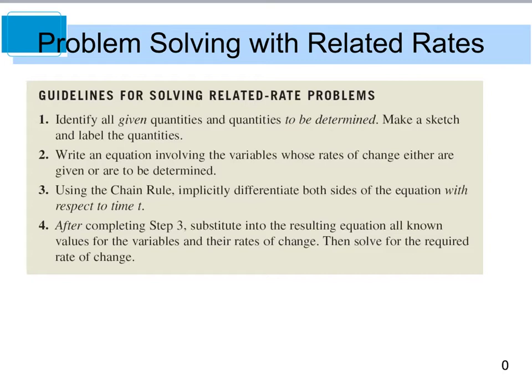Then we're going to use the chain rule to implicitly differentiate both sides of the equation with respect to time, because time is going to be that common link. And then once we're done, we're going to substitute in the values that were given and solve for the unknown values.